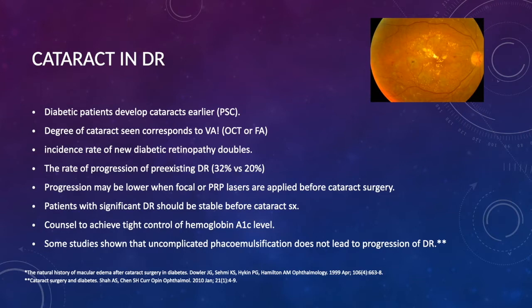Progression may be lower when focal and PRP laser is applied before the cataract surgery. However, in many instances this cannot be done because the cataract precludes the visualization. Patients with significant diabetic retinopathy should be stable before cataract surgery. However, knowing that those patients have an ongoing condition that might continue even after surgery, we should not deprive them of the right to have their vision improved by having their cataract removed. Counseling to achieve tight control of hemoglobin A1c is very essential in these cases.